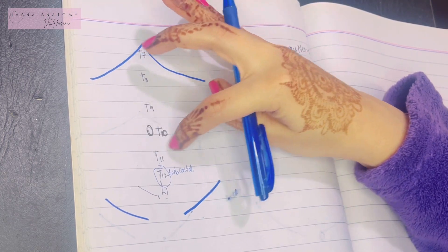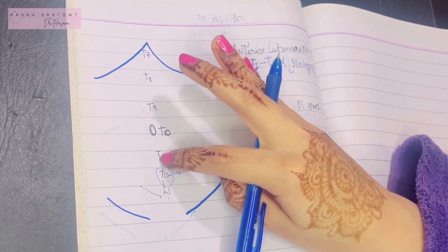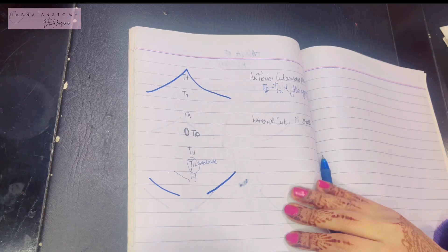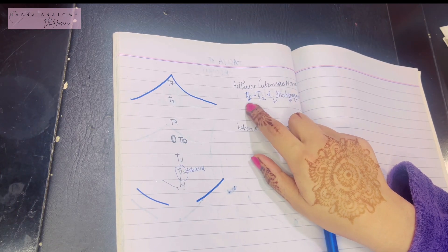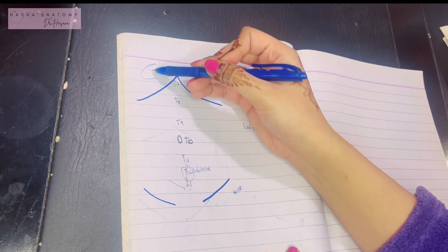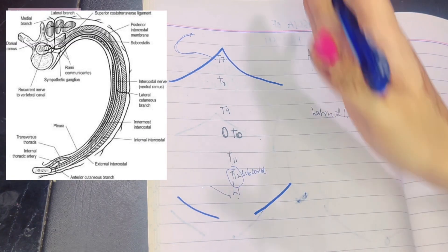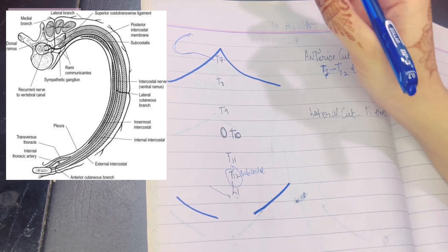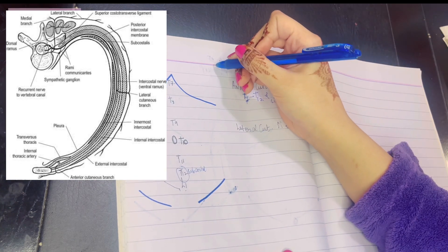To summarize the dermatomal levels: up to the umbilicus it is T7 to T9; at the umbilicus the dermatome is T10; below the umbilicus it is T11, T12, and L1. The anterior cutaneous nerves are derived from the lower intercostal nerves. The T7 to T12 nerves run in the intercostal spaces, then pierce the internal oblique muscle to enter the abdomen. They then pierce the rectus sheath and the rectus abdominis muscle.